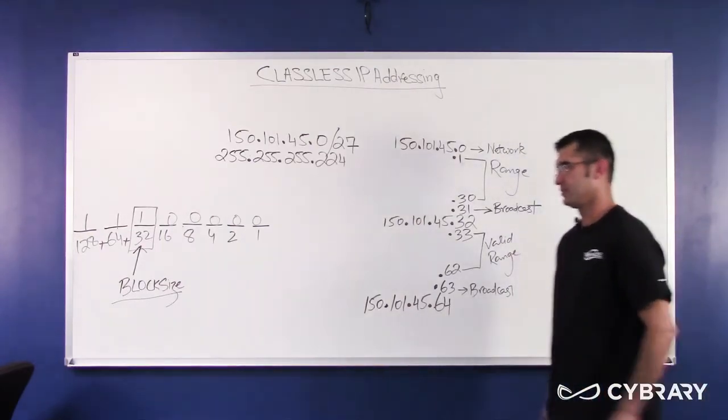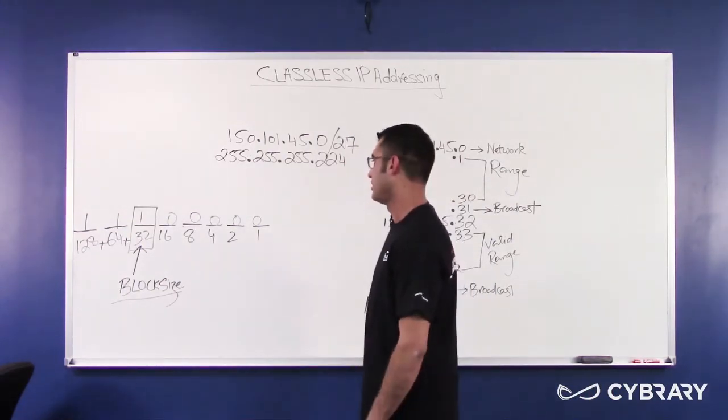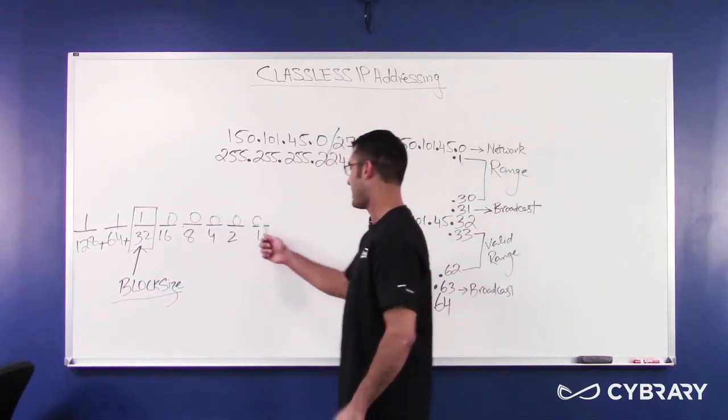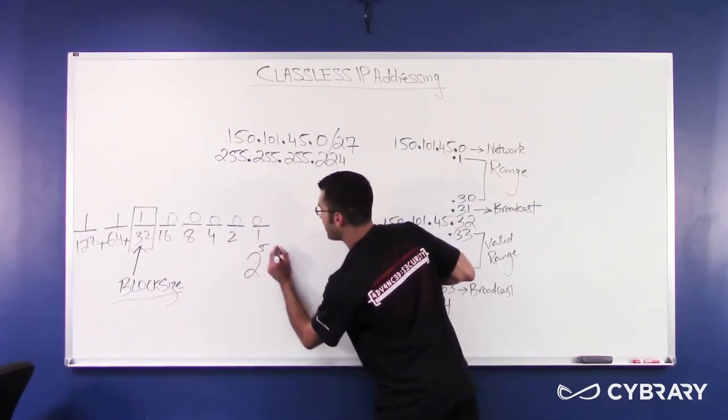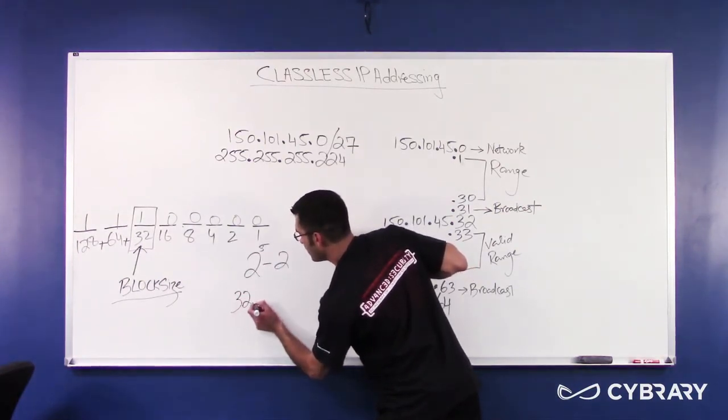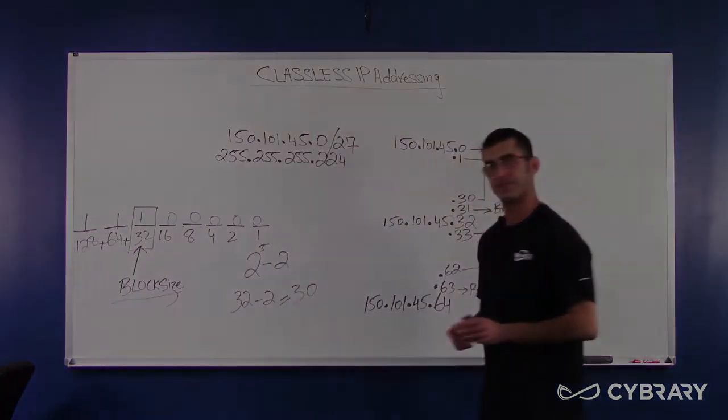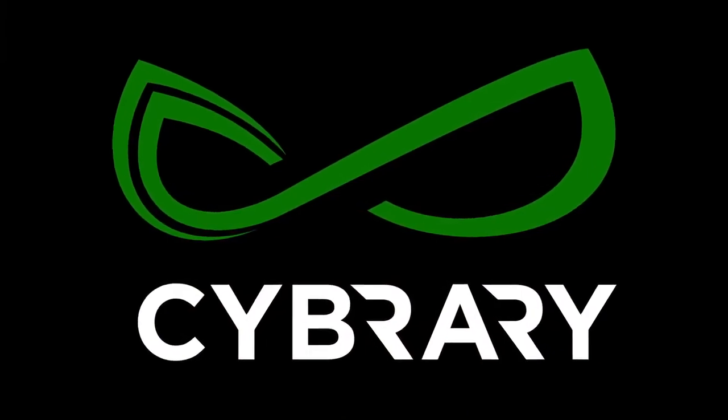Now, could I use that 2 to the power n minus 2 formula here? Of course I could. How many host bits do I have? 1, 2, 3, 4, 5. 2 to the power 5 minus 2. 2 to the power 5 is 32 minus 2 equals 30.